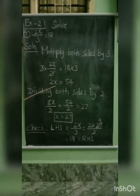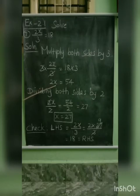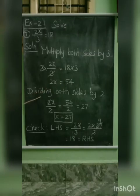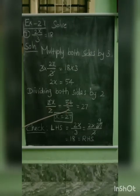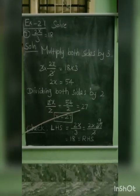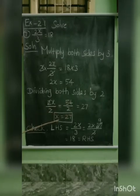Here we have 2x. Now, to cancel this 2, we get the value for the variable x. So, now, dividing both sides by 2: 2x by 2 equal to 54 by 2. The 2s cancel. 54 by 2 is 27. This 27 is the value for the variable x.